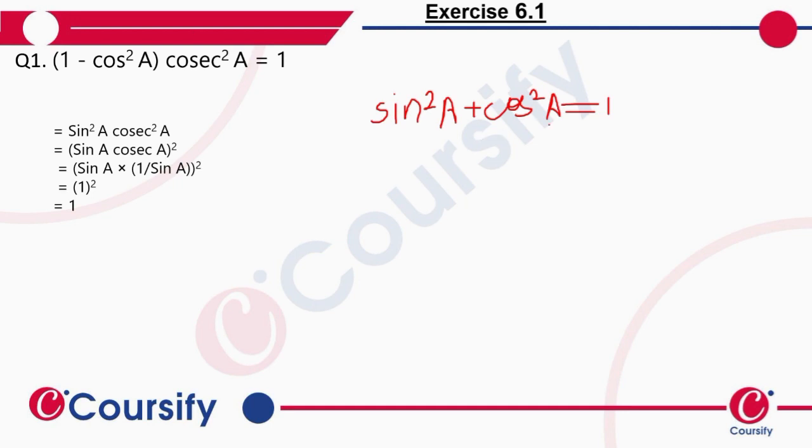So if sine square A plus cos square A is equal to 1, then if we shift cos square A to the right hand side, we will get that sine square A is equal to 1 minus cos square A.